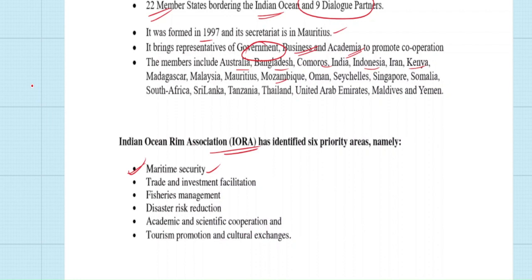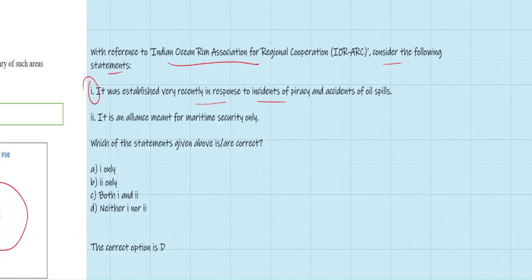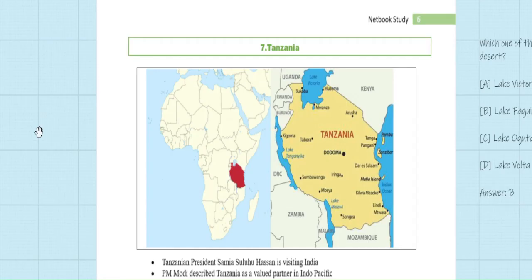IORA has six priority areas: maritime security (the most important objective), trade and investment facilitation, fisheries management, disaster risk reduction, academic and scientific cooperation, and tourism promotion and cultural exchanges. Previous year question: 'With reference to IORA, consider two statements. Statement 1: It was established recently in response to piracy and oil spill incidents. Statement 2: It is an alliance made for maritime security only.' The correct answer is D — neither statement is correct. IORA was constituted in 1997, not recently, and has multiple priority areas beyond maritime security.